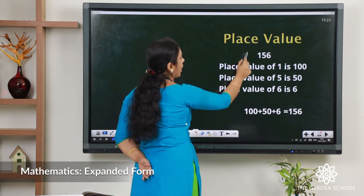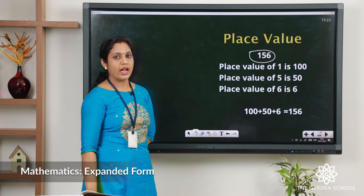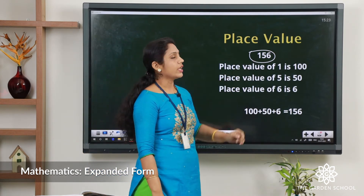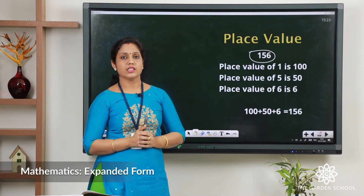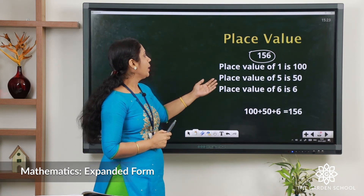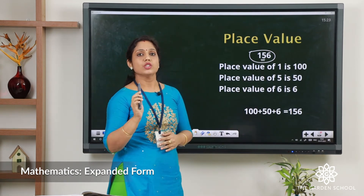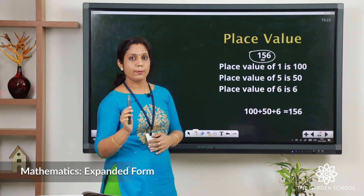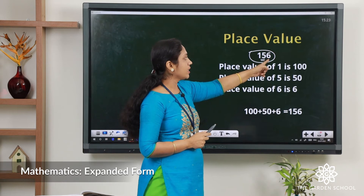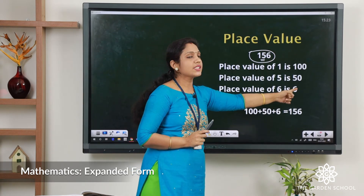Now let us check the number 156. The place value of 1 is in the hundreds place, so we can say it is 100. Place value of 5: 5 comes in the tens position, so 5 tens makes 50. Place value of 6: it comes in the ones position, so place value of 6 is 6.